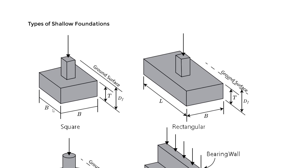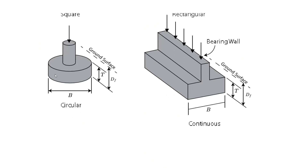For a square footing the B values are the same — the width equals the length in 3D. DF is the distance from the ground surface all the way to the base of the footing. We also have a rectangular foundation with B and L dimensions, and the footing thickness T. The footing is always the bottom portion; above it is the stem or wall. DF goes from the ground surface all the way to the bottom.